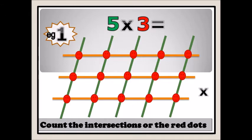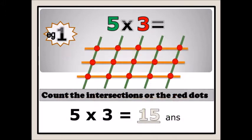You count the intersections: one, two, three, four, five, six, seven, eight, nine, ten, eleven, twelve, thirteen, fourteen, fifteen. So you can see easily — any child can do this. Five times three equals to fifteen. And what is multiplication? It's just adding, continuous adding. That means five plus five plus five equals fifteen.